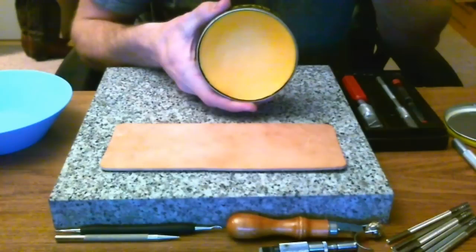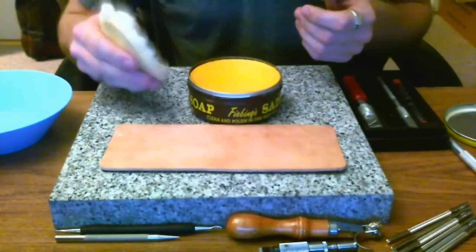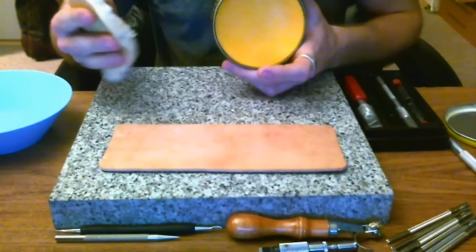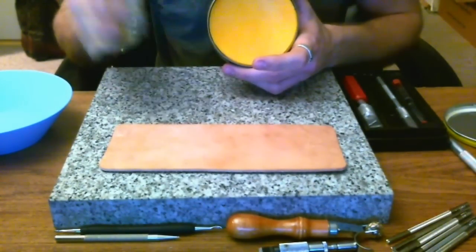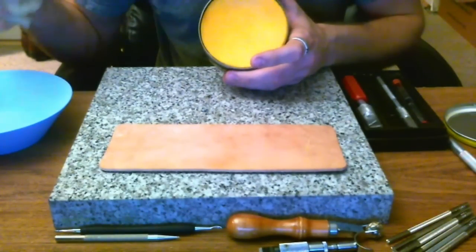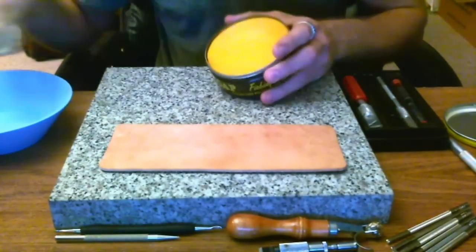What I've got here is saddle soap. You can use a number of different products to clean your leather. You can also go to the drugstore and get what they call oxalic acid crystals and you mix about a teaspoon of that with about a pint of water. You can use that to clean your leather as well.